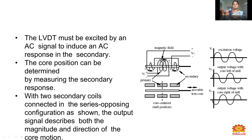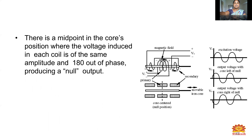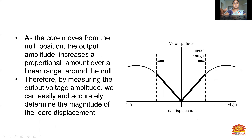Two secondary coils are connected in a series opposing configuration. The output signal describes both the magnitude and direction of the core motion. At the midpoint — the null position — the voltage induced in each coil is of the same amplitude and 180 degrees out of phase, producing a null output. As the core moves from the null position, the output amplitude increases proportionally over a linear range around the null. Therefore, by measuring the output voltage amplitude, we can easily and accurately determine the magnitude of the core displacement.